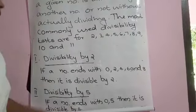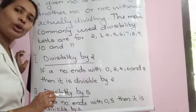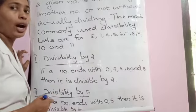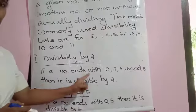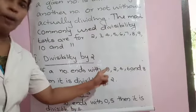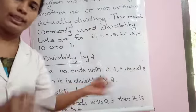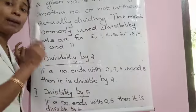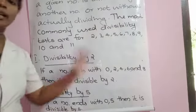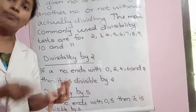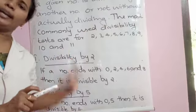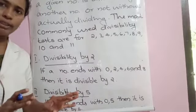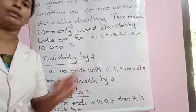Let us go through divisibility by 2. It's very easy — by seeing the number itself, we can predict whether it is divisible by 2 or not. If the given number ends with 0, 2, 4, 6, or 8, we can say that the given number is completely divisible by 2. You just need to look at the ones digit only. Whether it is a small or big number, we don't need to do actual division — it is completely divisible by 2.